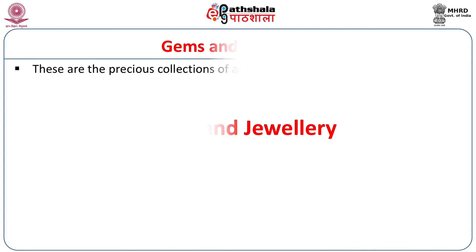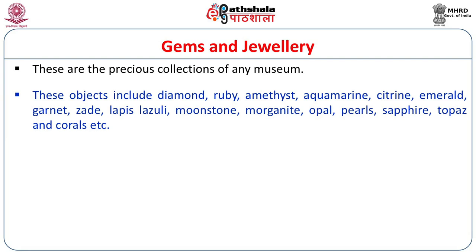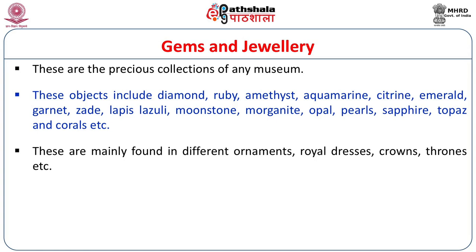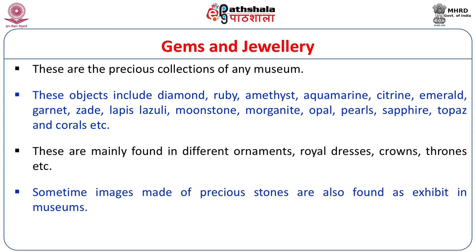In the case of gemstone jewellery, these are precious collections of any museum. These objects include diamond, ruby, amethyst, aquamarine, citrine, sapphire, topaz, corals, etc. These are mainly found in different ornaments, royal dresses, crowns, and thrones. Sometimes images made up of precious stones are also found as exhibits in museums. These are a different category of exhibit from organic and inorganic ones, and form a very precious collection of any museum.